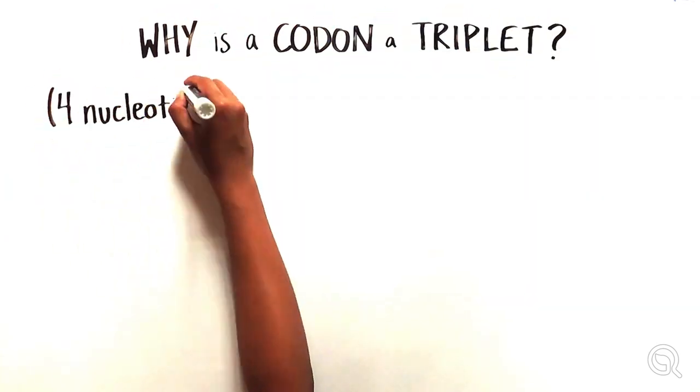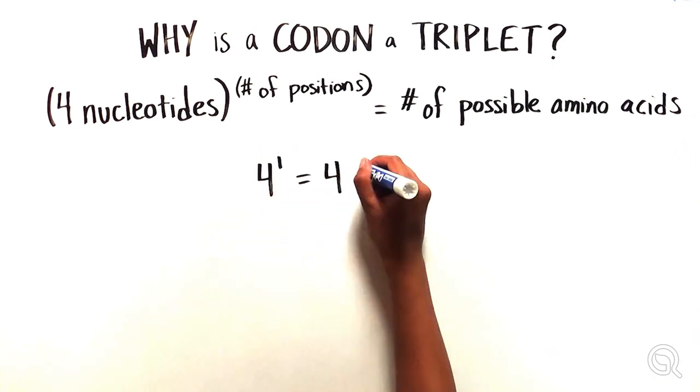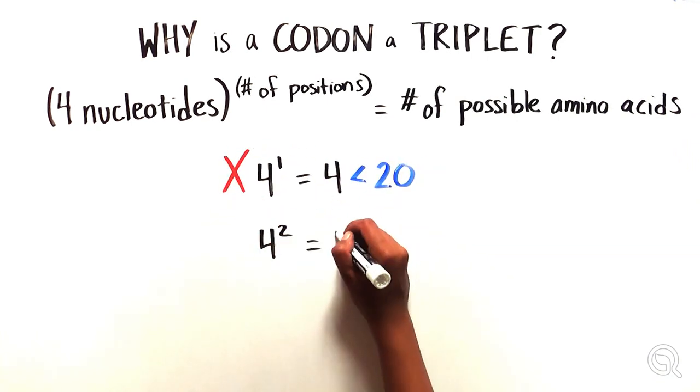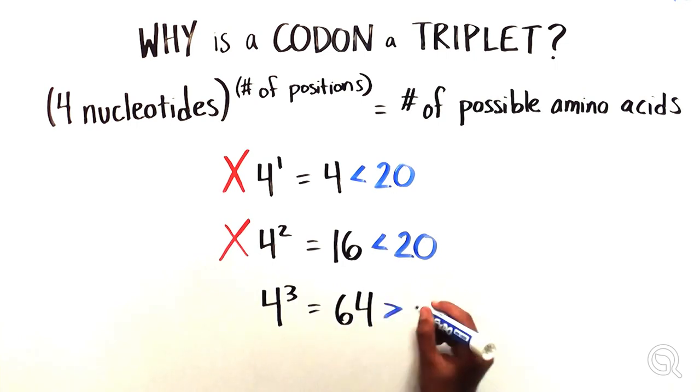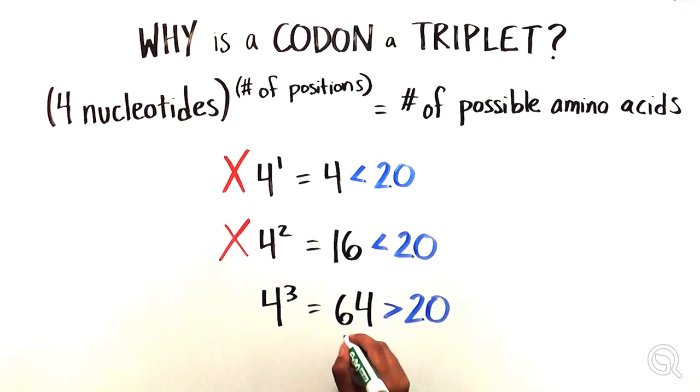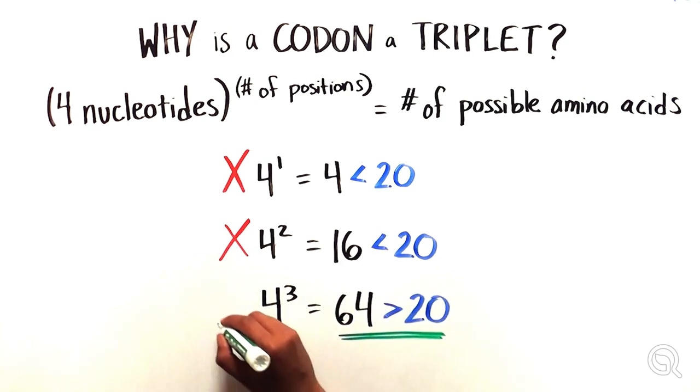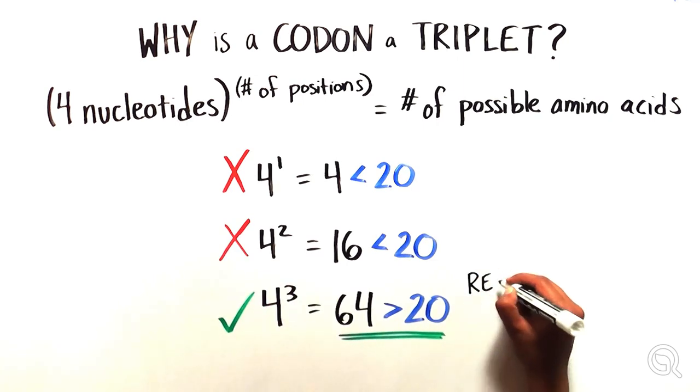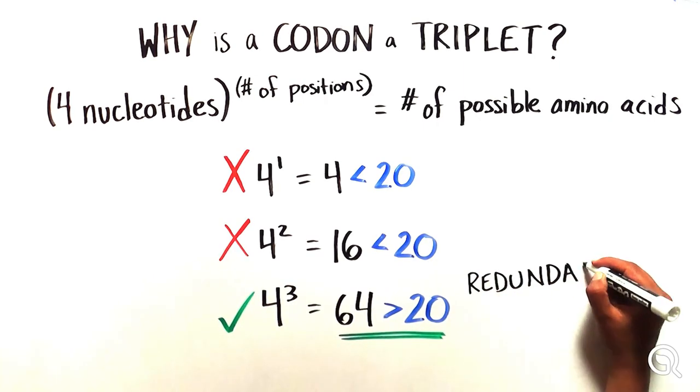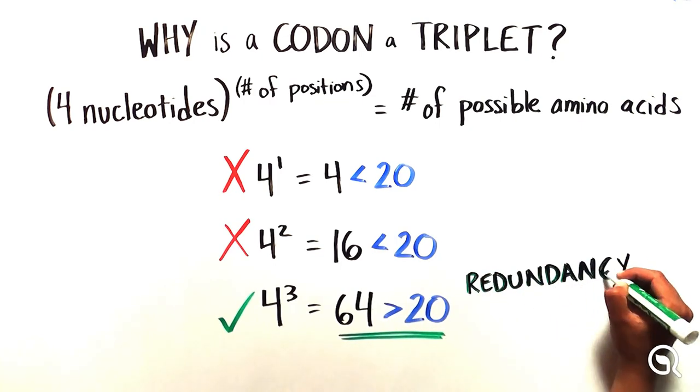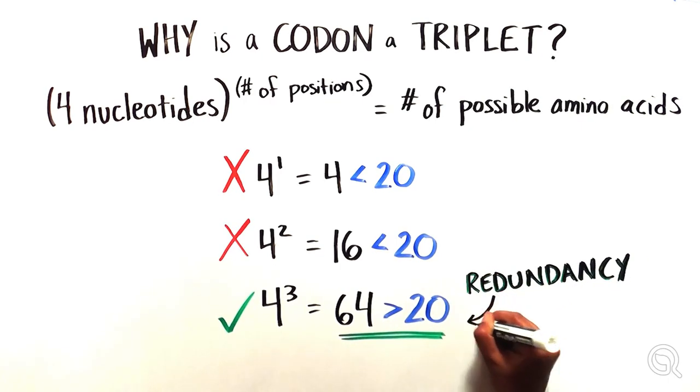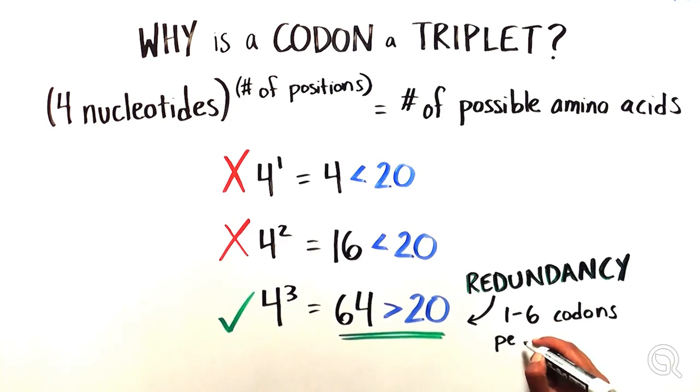A triplet makes mathematical sense because it's the smallest number of bases that can produce enough possible combinations, or 64 to be exact, to code for all 20 amino acids, as well as codons that signal for translation to stop. As 64 codons more than covers the 20 amino acids, the redundancy in the genetic code means that anywhere from 1 to 6 codons will encode for a specific amino acid.